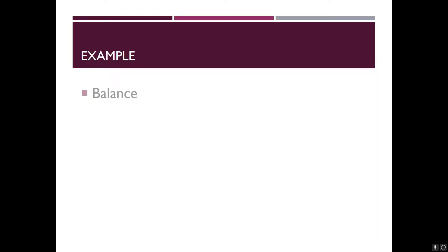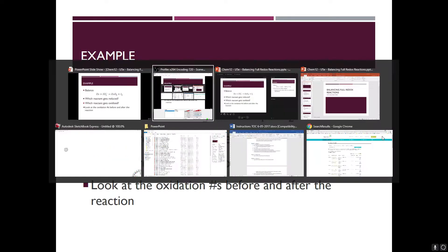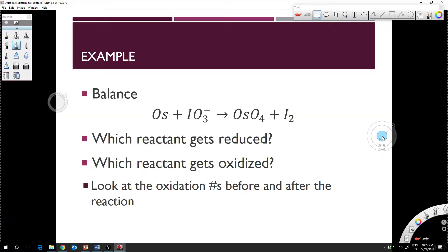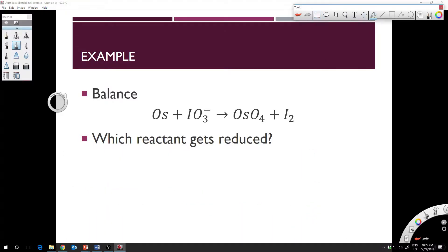One key point: step five happens before we combine everything. Step five is where we multiply each half reaction by some whole number so that we get an equal number of electrons, because by the end of the reaction there should be no electrons present. This builds off what you learned in science 10 and chem 11 — when we write fully balanced chemical reactions we don't have any electrons. Same is true with a fully balanced redox reaction.